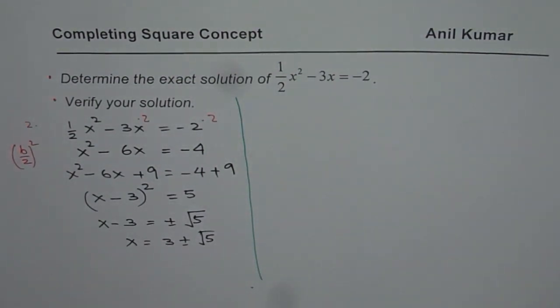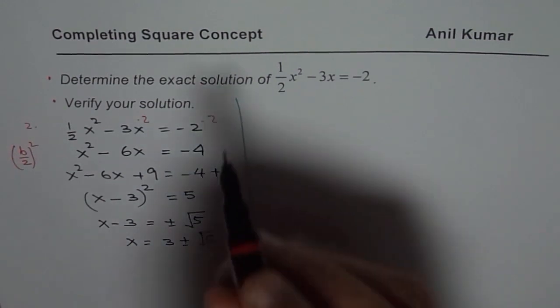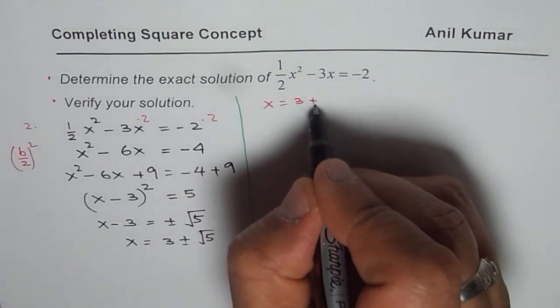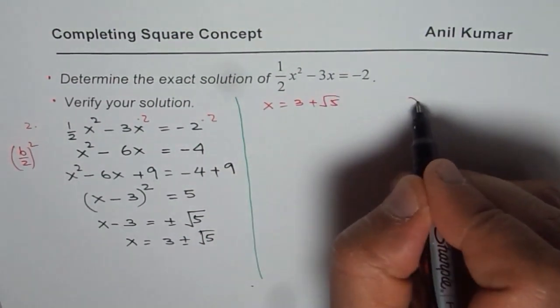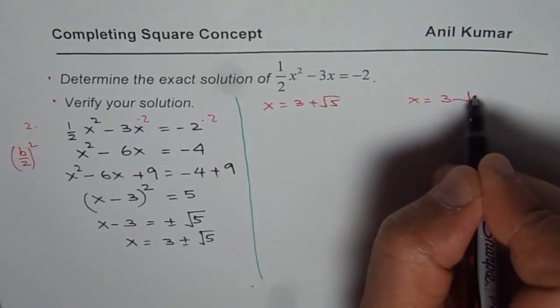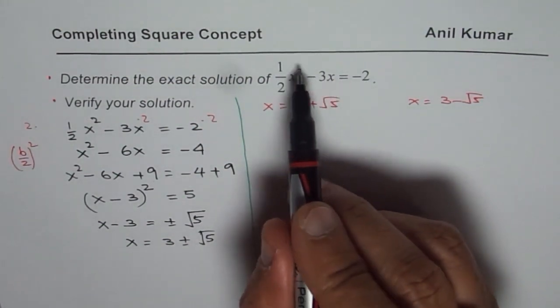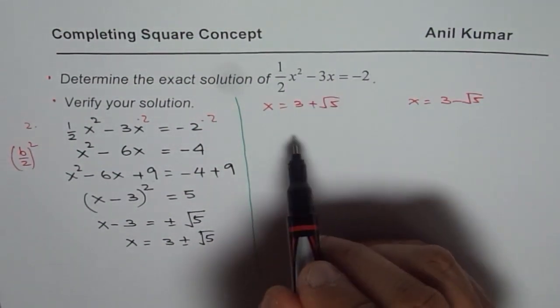Once we have the solution, we can check whether this solution is indeed correct or not. Now to check, we'll substitute x equals to 3 plus square root of 5 and x equals to 3 minus square root of 5 in the given equation and verify that left side is equals to right side.